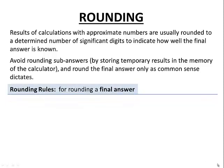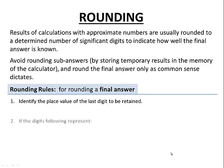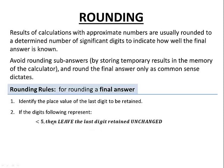Now there are some rules for rounding. When rounding a final answer, we first identify the place value of the last digit to be retained. Then we look at the digits that follow that last digit. If the digits following are less than five, then we leave that last digit retained unchanged.